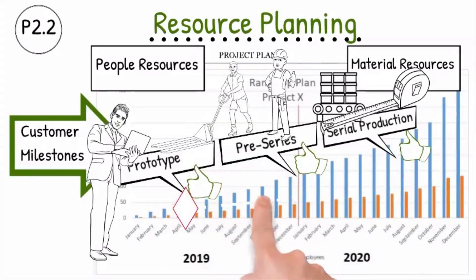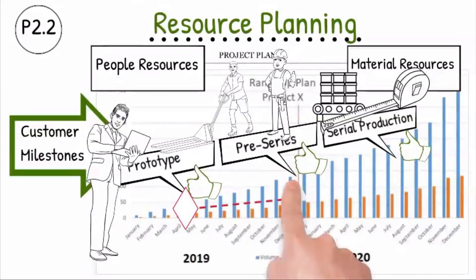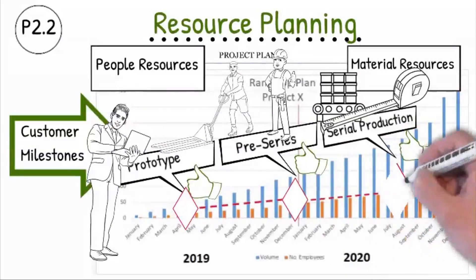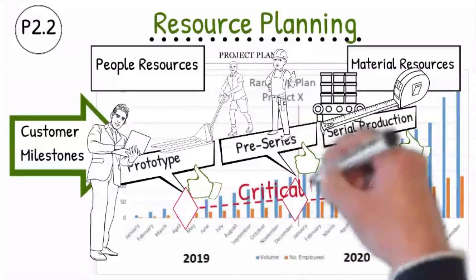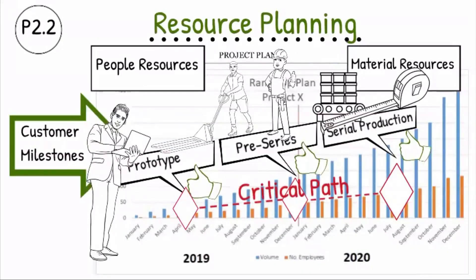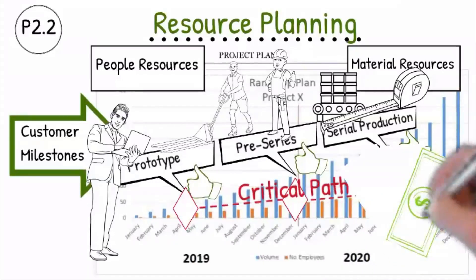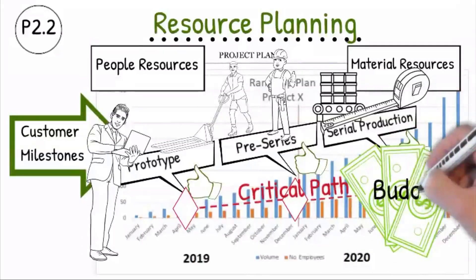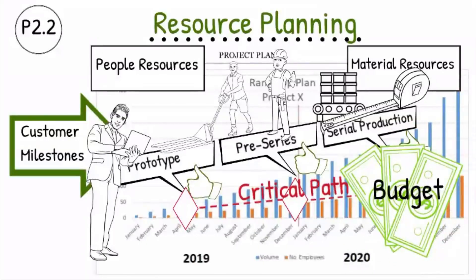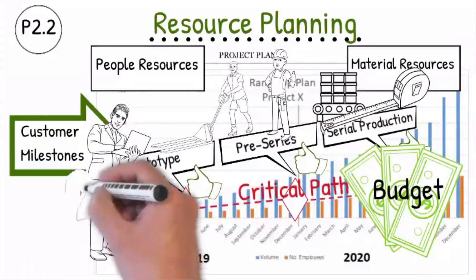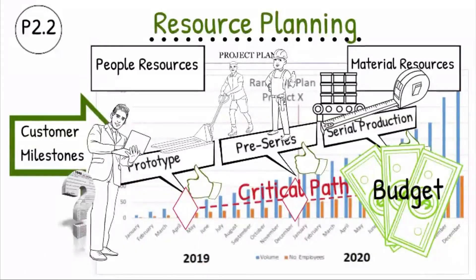The critical path is given special consideration within the planning to ensure the people and equipment will be available and capable at the right time. The necessary project budget for personnel and equipment is planned and released. The project team's workload has to be considered to ensure they can focus on the project activities.